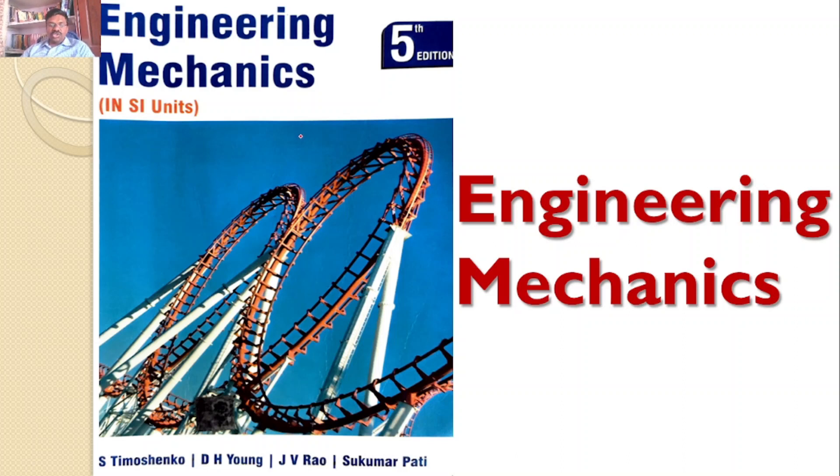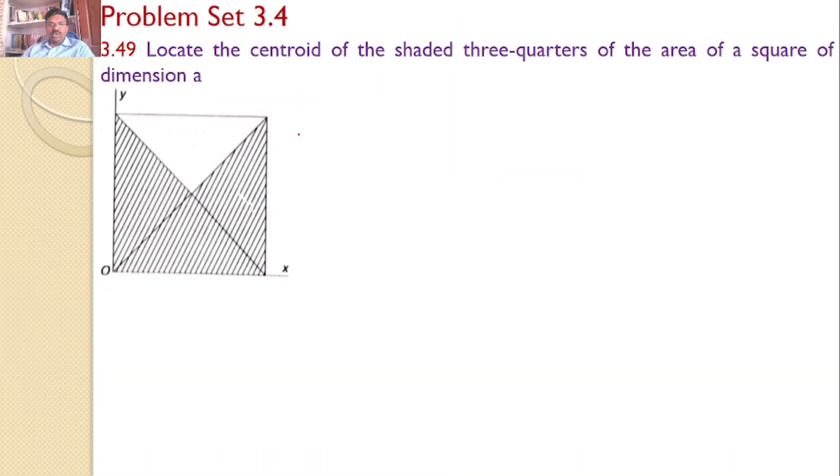Welcome to RK Tutorials, Solutions to Engineering Mechanics by Estimation Co, 5th edition. In this tutorial, we will discuss problem set 3.4, problem number 3.49. Locate the centroid of the shaded three-quarters of the area of a square of dimension a.